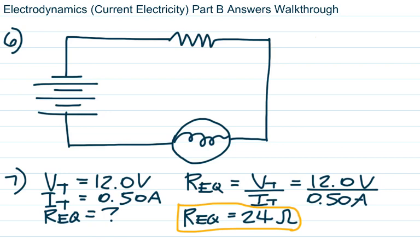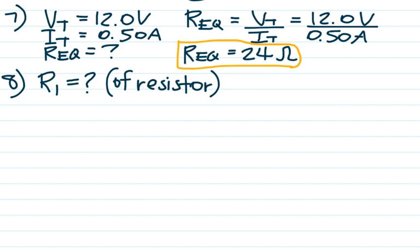In terms of grading the Regents exam, they aren't too strict about significant figures but are much stricter about making sure you show units. For multiple choice, the official answer is already rounded for significant figures. Number eight wants the resistance of the resistor, given that the lamp's resistance is 10 ohms — it would be helpful to organize information in a table.